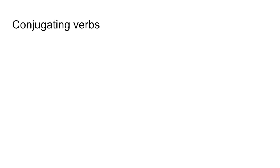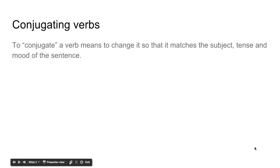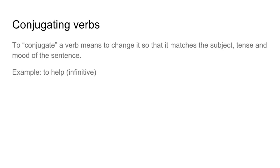So to conjugate verbs, let's talk a little bit in English about what it means to conjugate verbs. To conjugate a verb means to change it so that it matches the subject, the tense, and the mood of the sentence. For example, in English, 'to help' — that's the verb in the infinitive form. Notice an infinitive has 'to' in front of it in English. So: to help, to run, to play, to hide. When I say that, I'm not conjugating it, which means I'm not telling you what the subject is, the tense, or the mood.